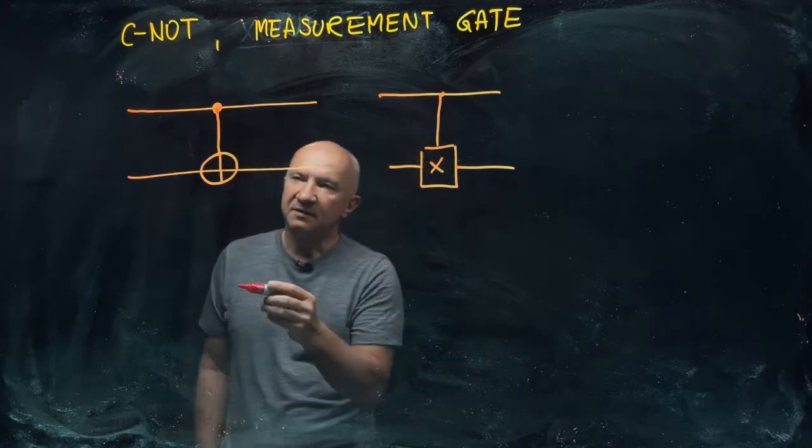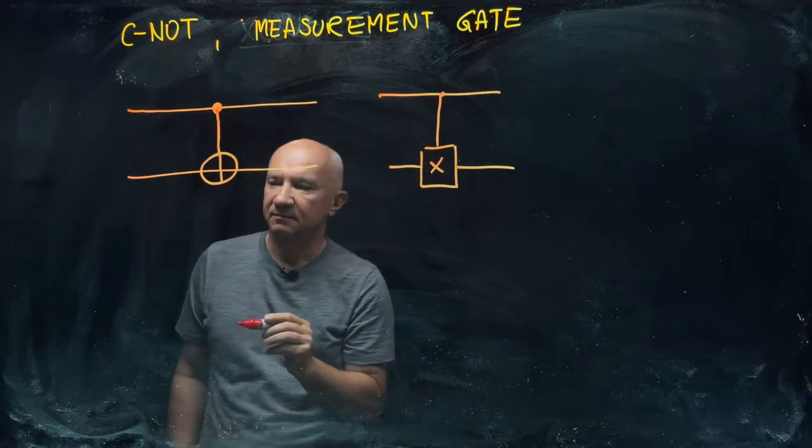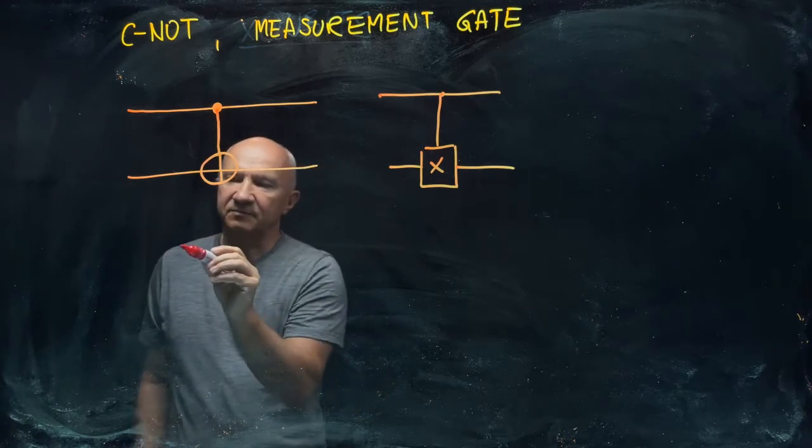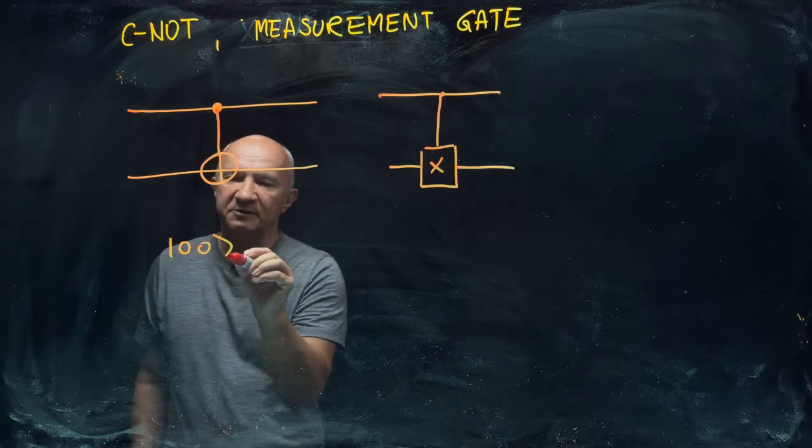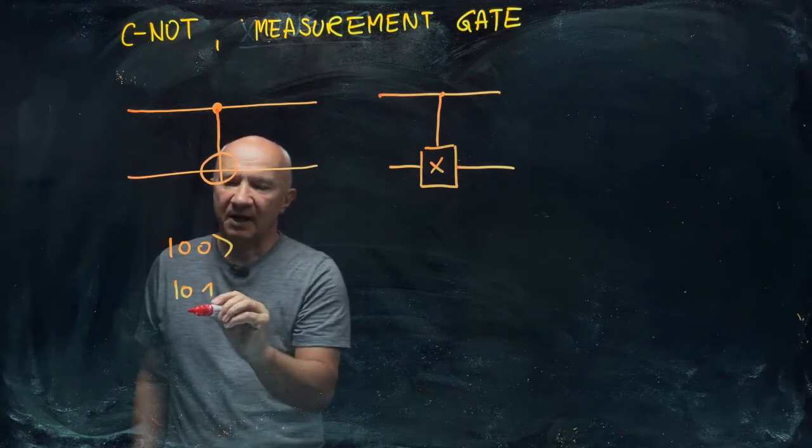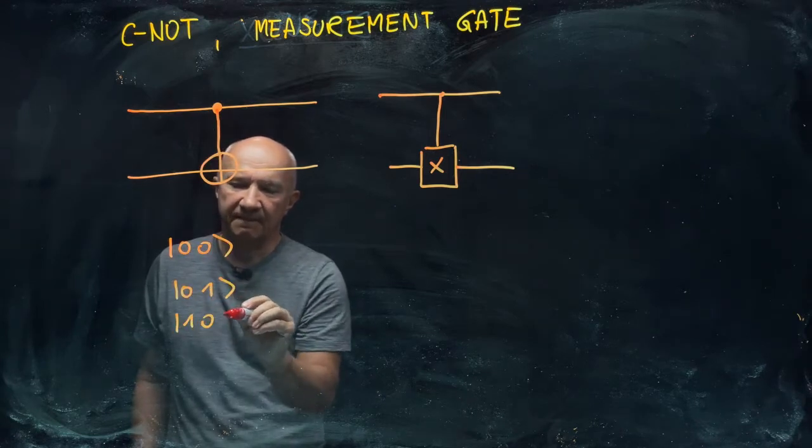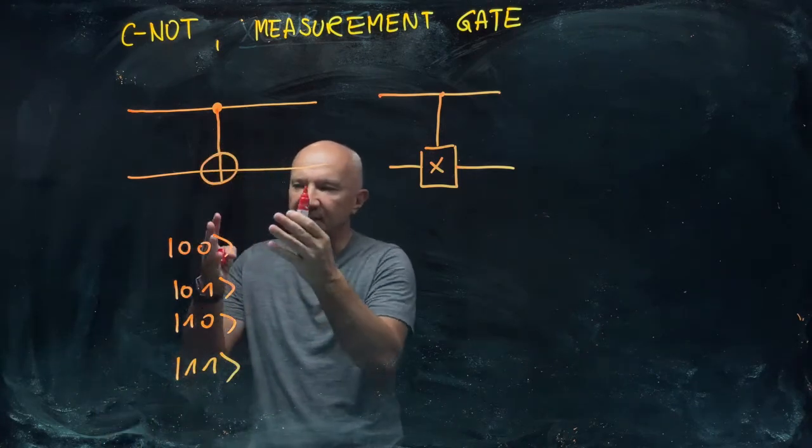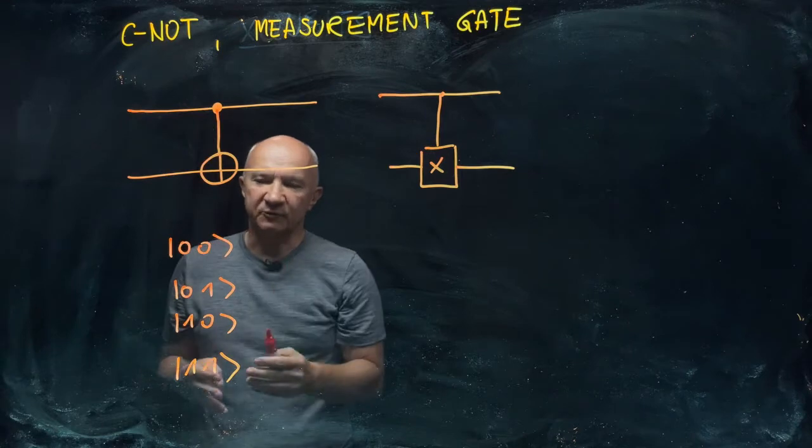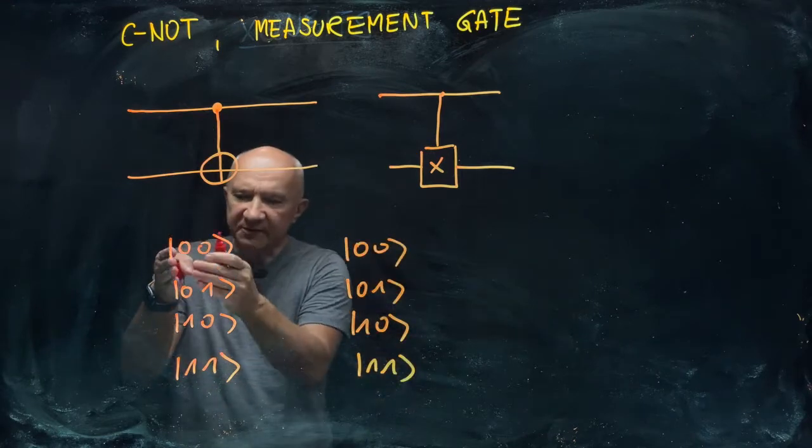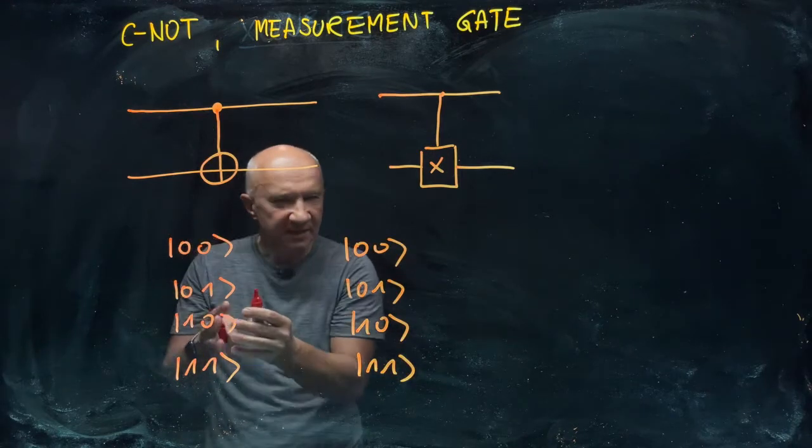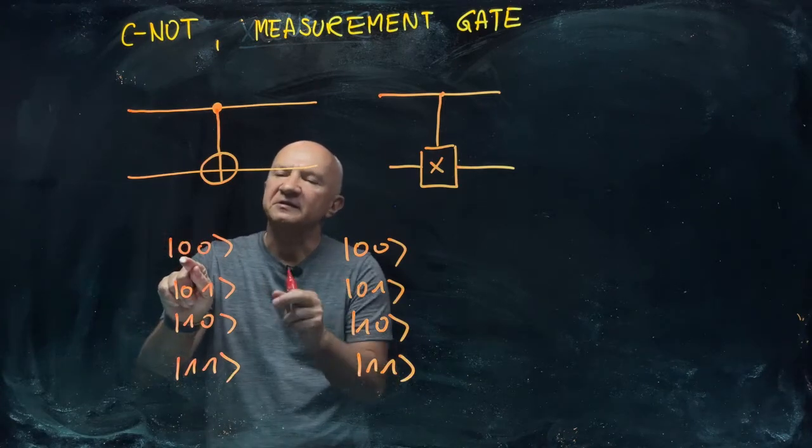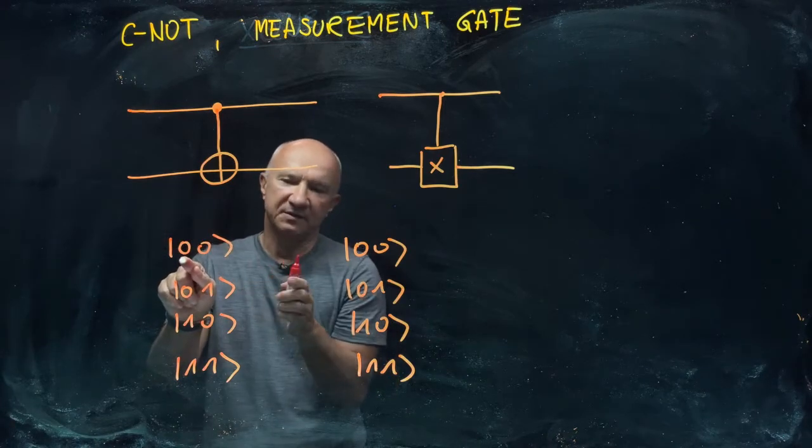The action of this gate can be completely specified by telling you how it acts on the four basis states. I have four basis states of my two qubits: the first qubit is the control qubit, the second one is the target qubit. So if the first qubit is in state zero, nothing happens to the second qubit.